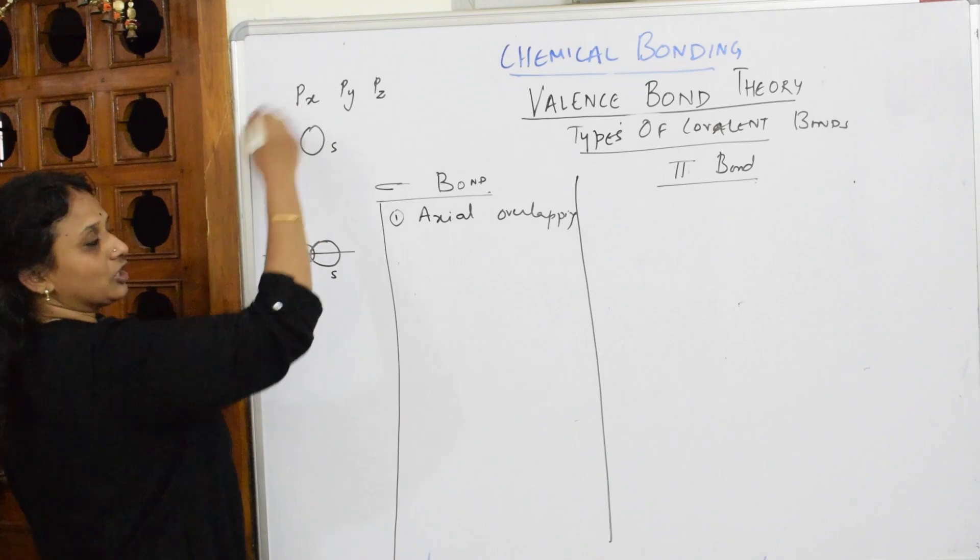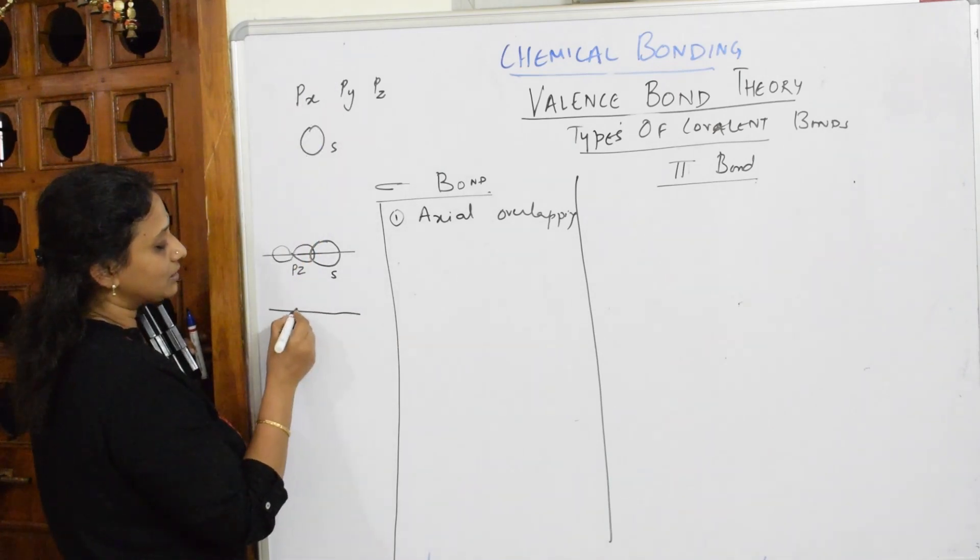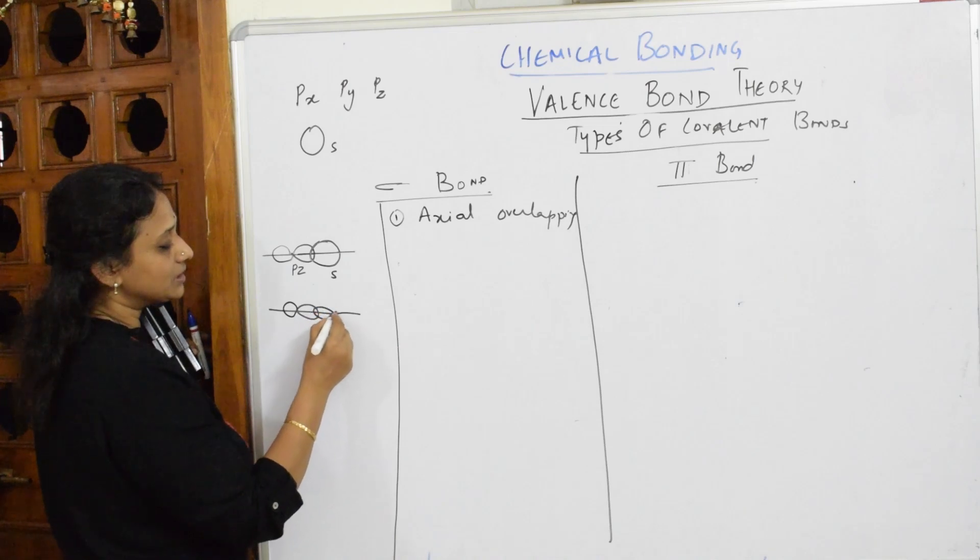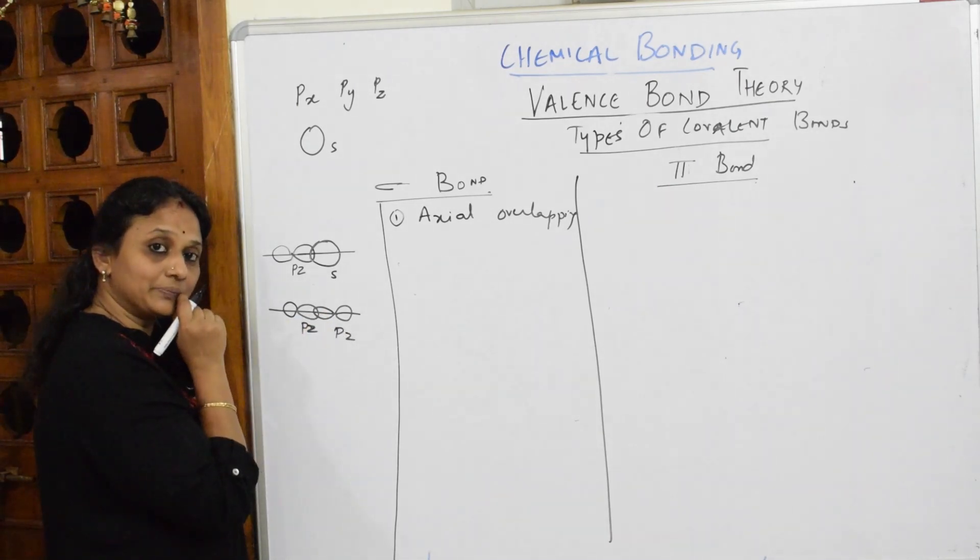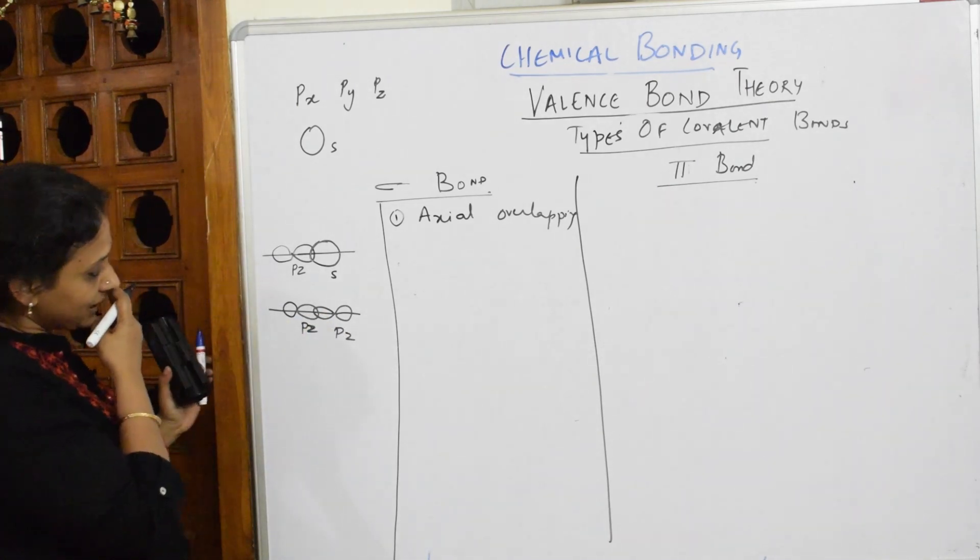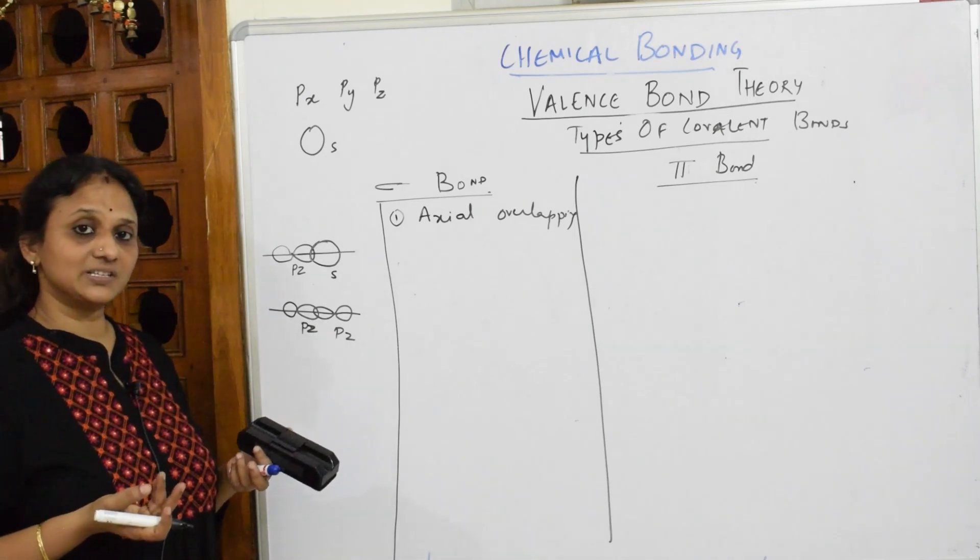Let me pick up any combinations. I picked up pz and pz. This is also sigma bond. Axial overlapping. Are we not finding? Axially. So pz and pz also is sigma. Pz-ps also is sigma.